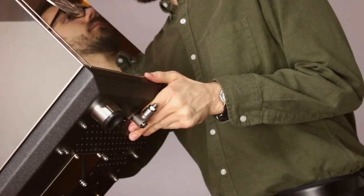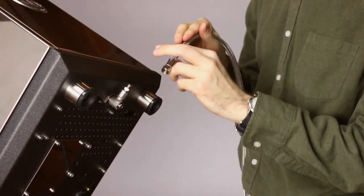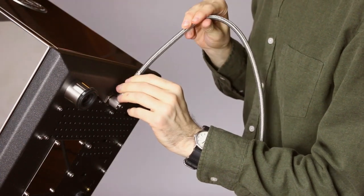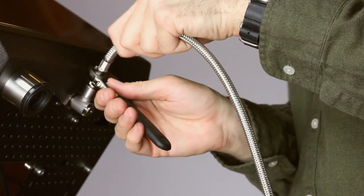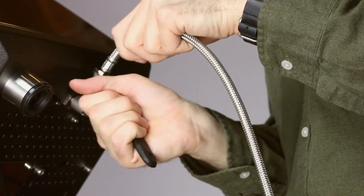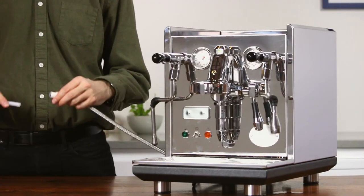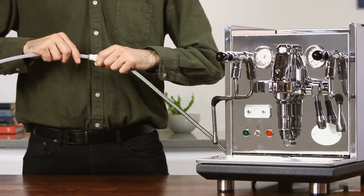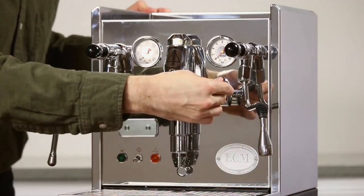For plumbed-in use, attach the included braided line to the direct water inlet located on the bottom of the machine. To attach, simply screw on the line until hand tight, then use an adjustable wrench to tighten an additional quarter turn. Attach the other end of the braided line to a cold water source. Open your water line and check for leaks. If there are no leaks, lift the brew lever and turn the machine on.